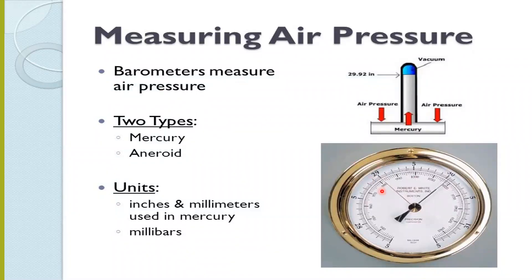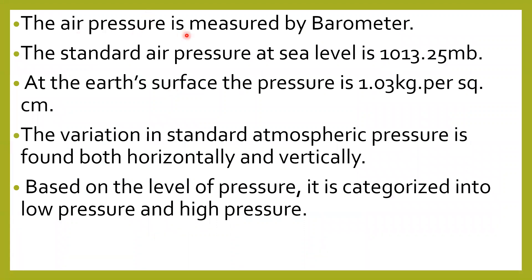A barometer measures air pressure. There are two types: the mercury barometer and the aneroid barometer. The unit to measure air pressure is millibars, whereas in the mercury barometer, millimeters and inches are used. The standard air pressure at sea level is 1013.25 millibars. At the earth's surface, the pressure is 1.03 kg per square centimeter. The variation in standard atmospheric pressure is found both horizontally and vertically, and based on the level of pressure it is categorized into low pressure and high pressure.